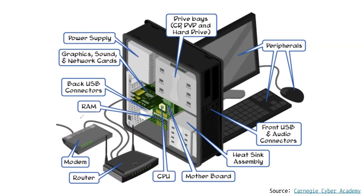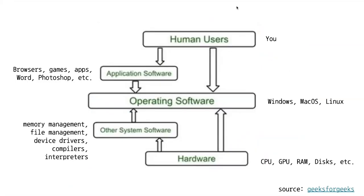The main things we'll be thinking about is that we have some kind of limited memory in our computer and the computing power — the brains. Within this machine we have hardware, which is the physical component, and then we have software, which is the logical components written in code on top of the hardware in order to interact with it.